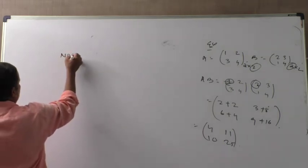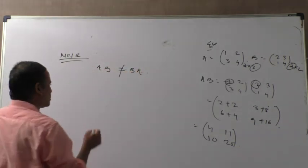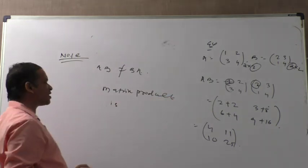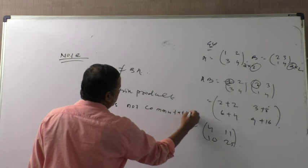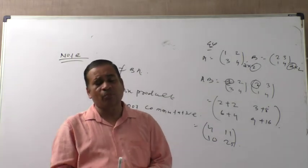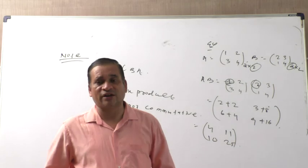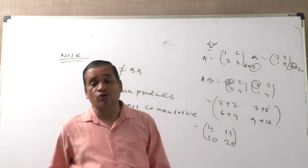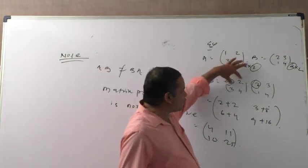Now, an important note: the product AB is not equal to BA. That is, matrix product is not commutative. We have to practice more and more products so that we can also find the inverse of the matrix, which is used to find the values of x and y — that is, the solution of the matrix. This is the basic concept.